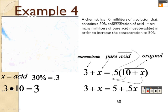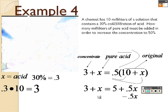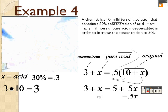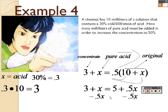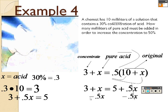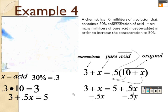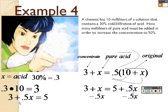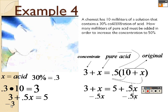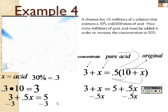So when I'm doing this, I combine my like terms. I like to have positive x's, so negative 0.5x to both sides. They cross out. So I have 3 plus 0.5x because one whole minus a half is a half. Equals 5. Minus 3 on both sides.